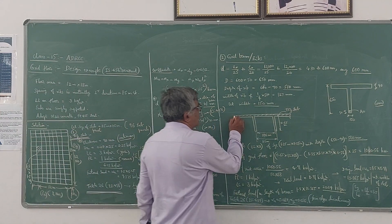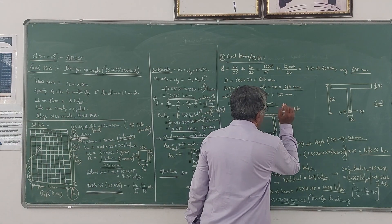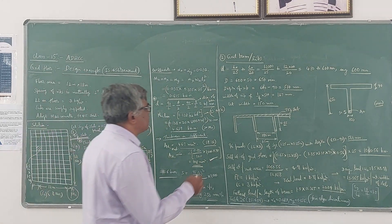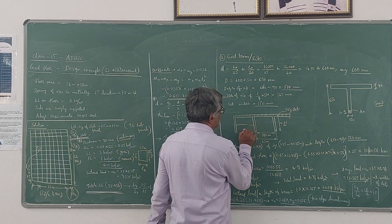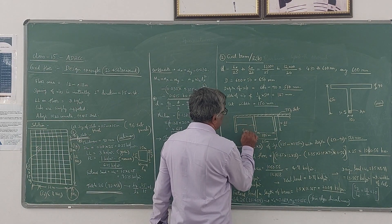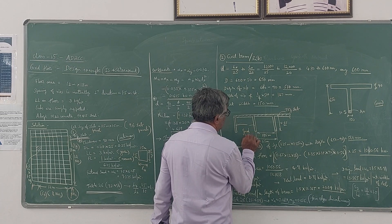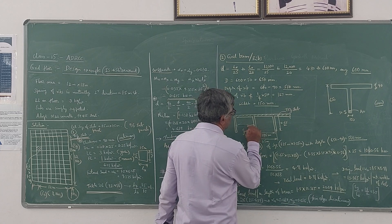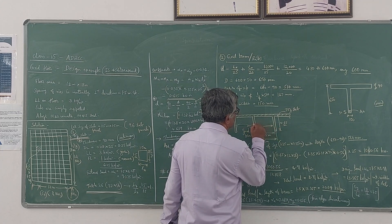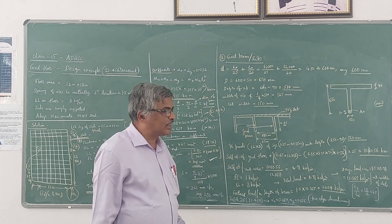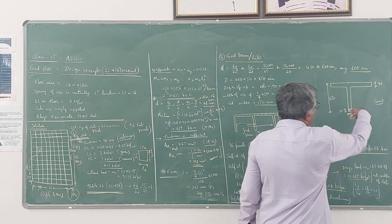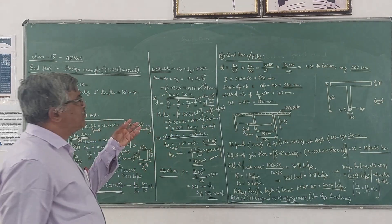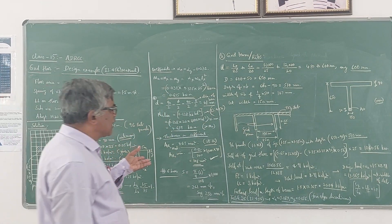Now coming to the design of grid beams. The grid beams are the intermediate beams forming the T-section ribs of the grid floor system. These are also called ribs, and we now proceed to design them.